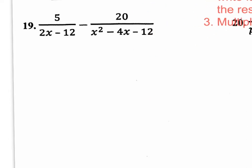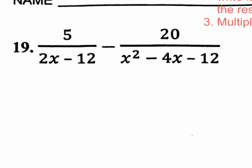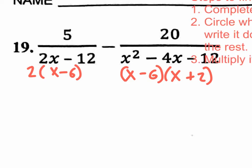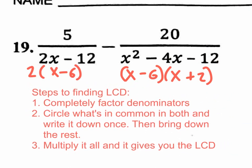Let's factor the first denominator: we can pull out a two, leaving X minus six. For the second denominator, it's a quadratic trinomial — what times what is the C value negative 12, that if combined gives the B value negative four? That's negative six times positive two: negative six times two gives negative 12, and adding them gives negative four in the middle. So step one is complete — both denominators are factored.